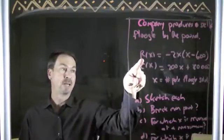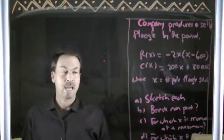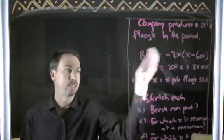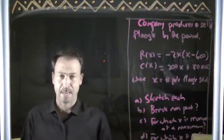That is, revenue is apparently given magically by a quadratic formula, negative 2x times x minus 600, and the cost function is given by 200x plus 80,000. It's a nice linear function. And this is for x, which is the number of pounds of flugel they make and sell.